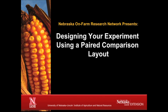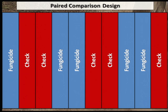UNL Extension's Nebraska On-Farm Research presents Designing Your Experiment Using a Paired Comparison Layout, the third of four videos in this series. In the last video, we learned about the importance of randomization and replication in designing the experiment. To compare two treatments, such as an untreated area and a fungicide treatment at V5 Corn, you can use the paired comparison design. This is a randomized, complete block layout with just two treatments.